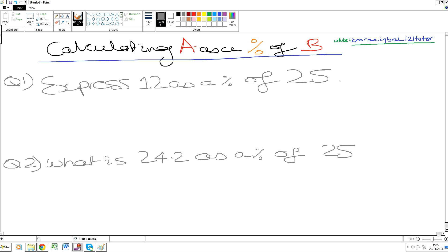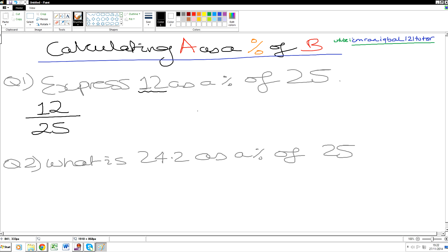Now when we write that down, we need to first convert this English sentence into a fraction. On the top you put the first number - what is the first number? 12. As a percentage of 25 - 25 goes on the bottom.